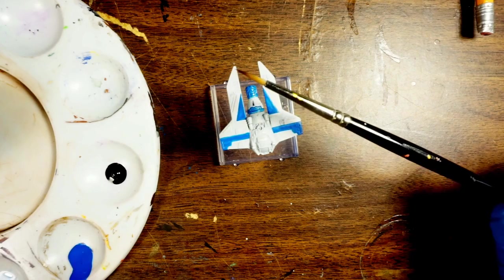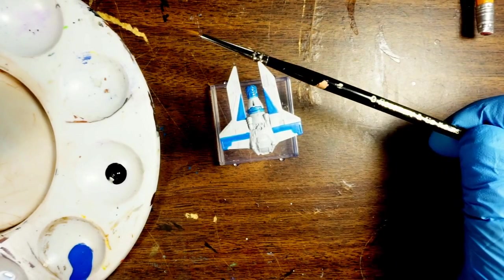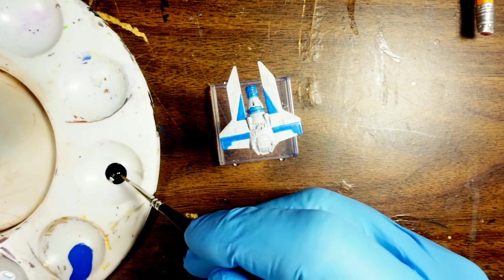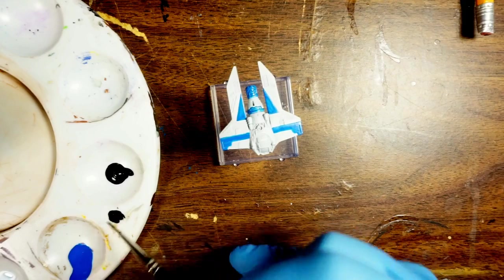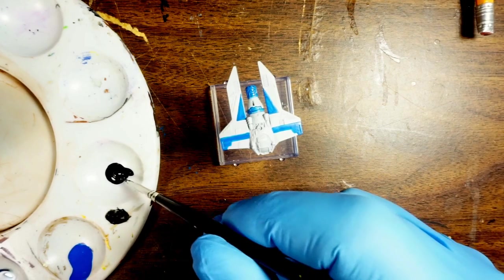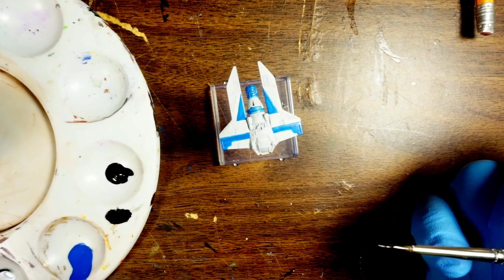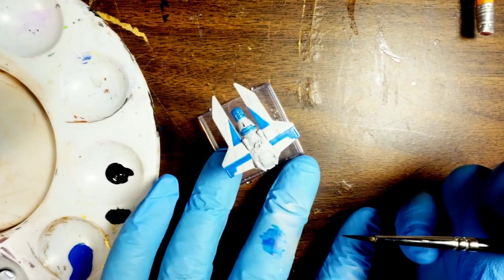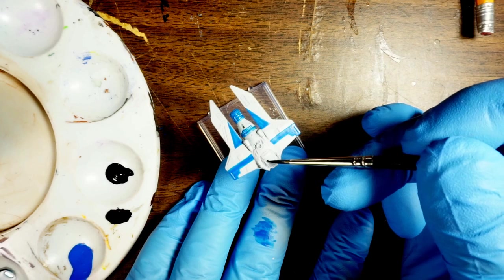I'm actually changing brushes. Just for your own information this is a Winsor Newton series 7, I believe this is a size zero. I'm going to switch over to a Rosemary and Company size zero. Why you might ask? Well I've been discovering that I really like the Rosemary and Company brush for doing fine detail.